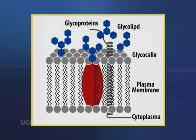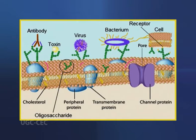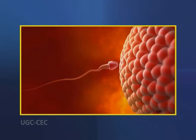Carbohydrates can attach to proteins to form glycoproteins. Carbohydrate groups are covalently attached to many different proteins to form glycoproteins. Many glycoproteins are components of cell membranes, where they play a variety of roles in processes such as cell adhesion and the binding of sperm to eggs.